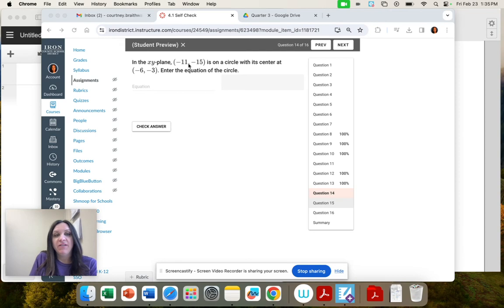In the xy-plane, negative 11, negative 15 is on a circle and its center is at negative 6, negative 3. What's the equation?